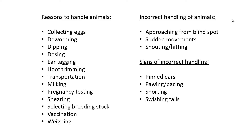Dosing is almost like deworming, but we are dosing the animal against other types of internal parasites, not just worms. Then when we want to tag the ears so that we can label them and know whose animal is whose, we must handle them physically. Then trimming the hooves, which mostly applies to horses, but sometimes cows or even pigs may need hooves trimmed to treat inflammation. Also for transportation purposes, they will have to be handled to be loaded onto a truck.